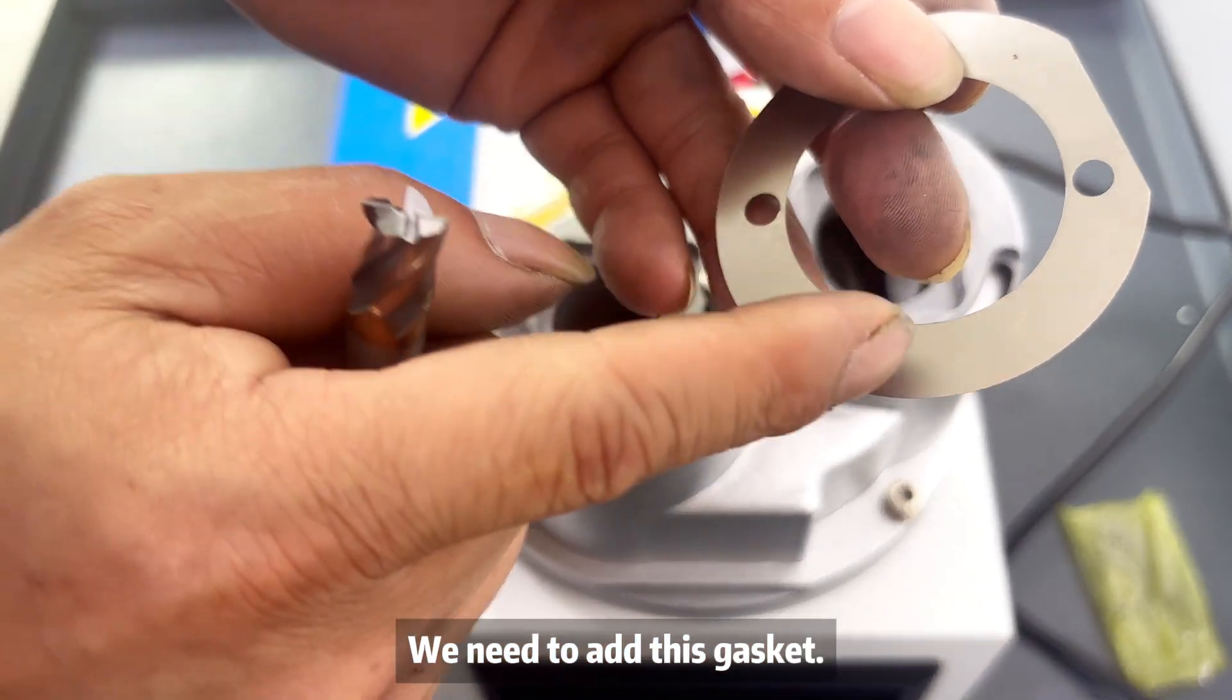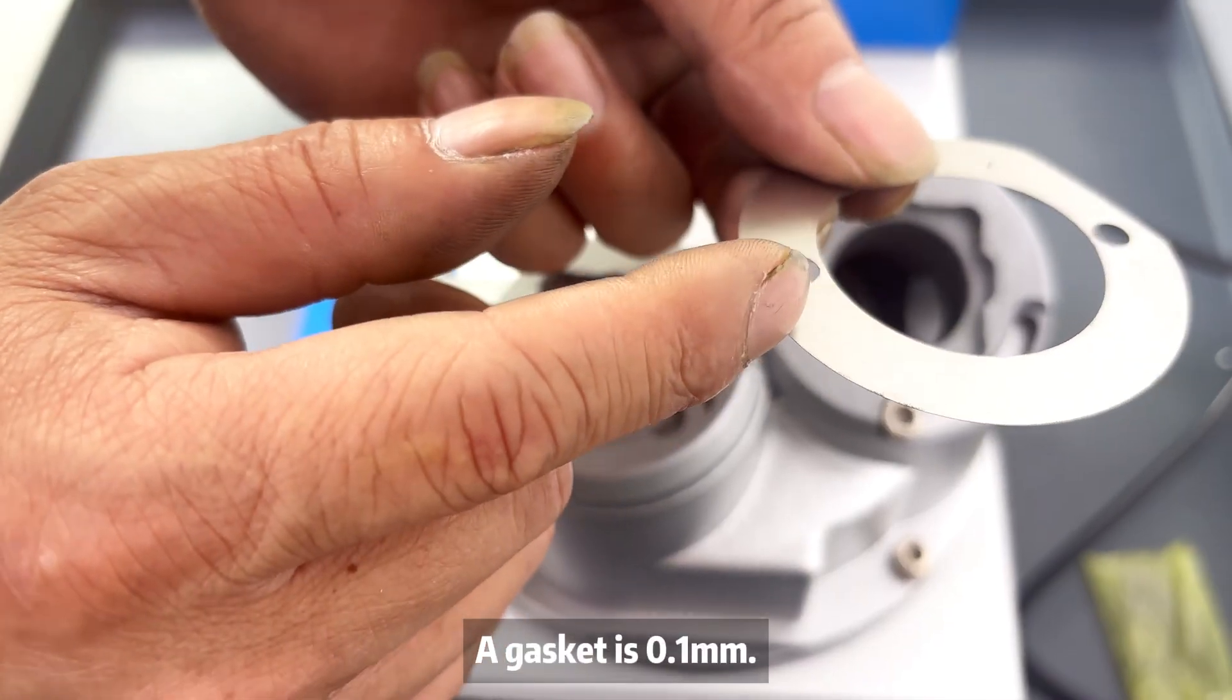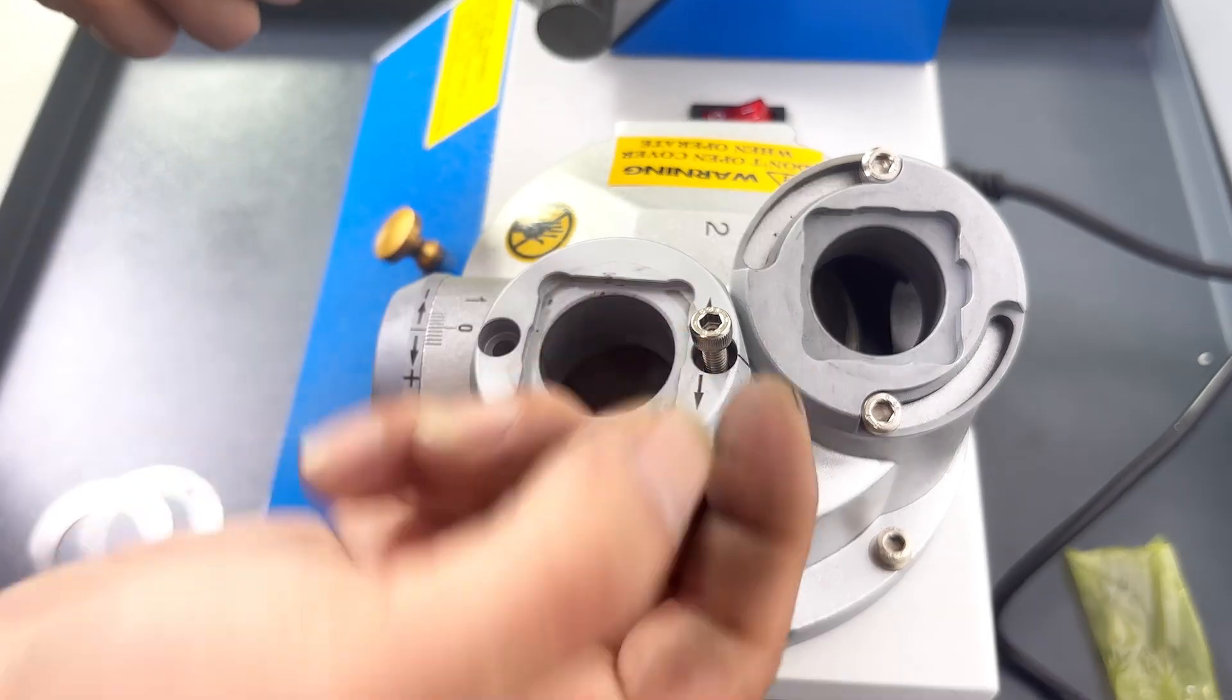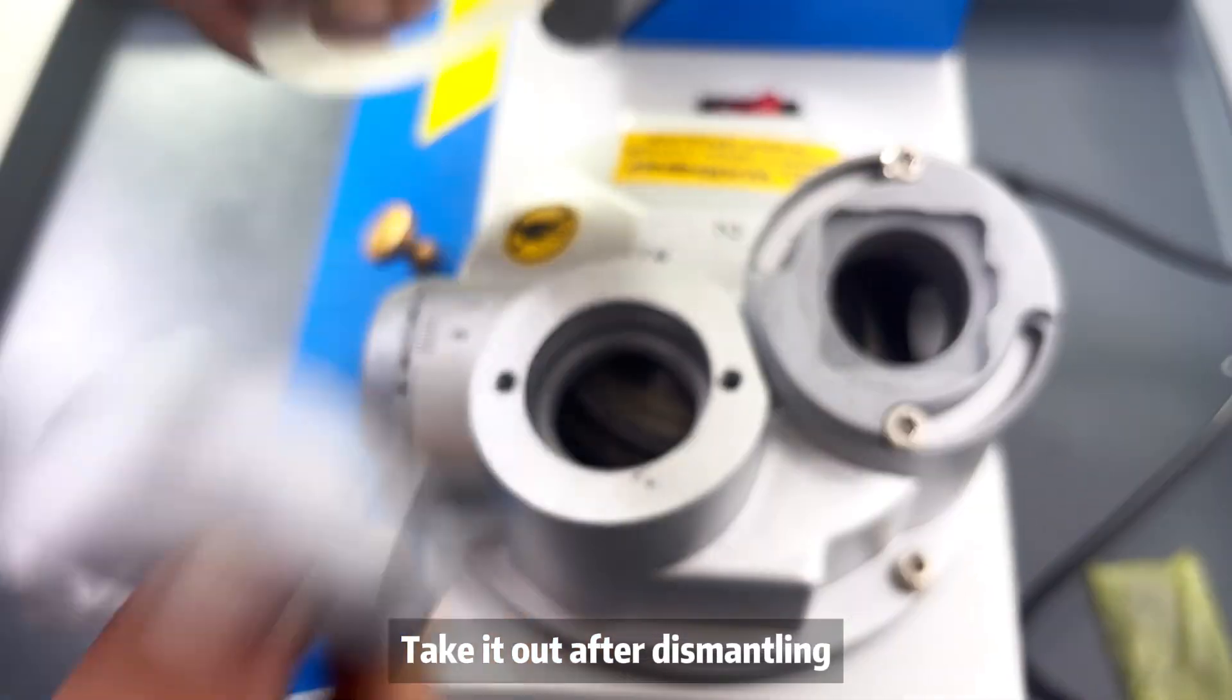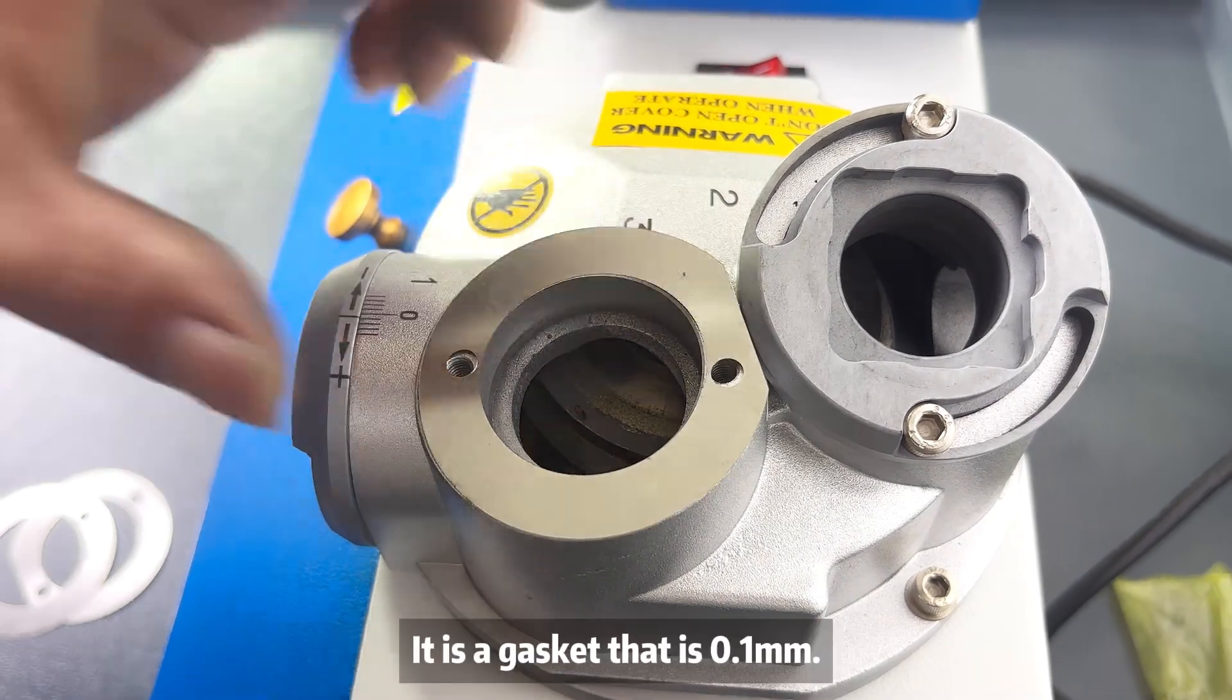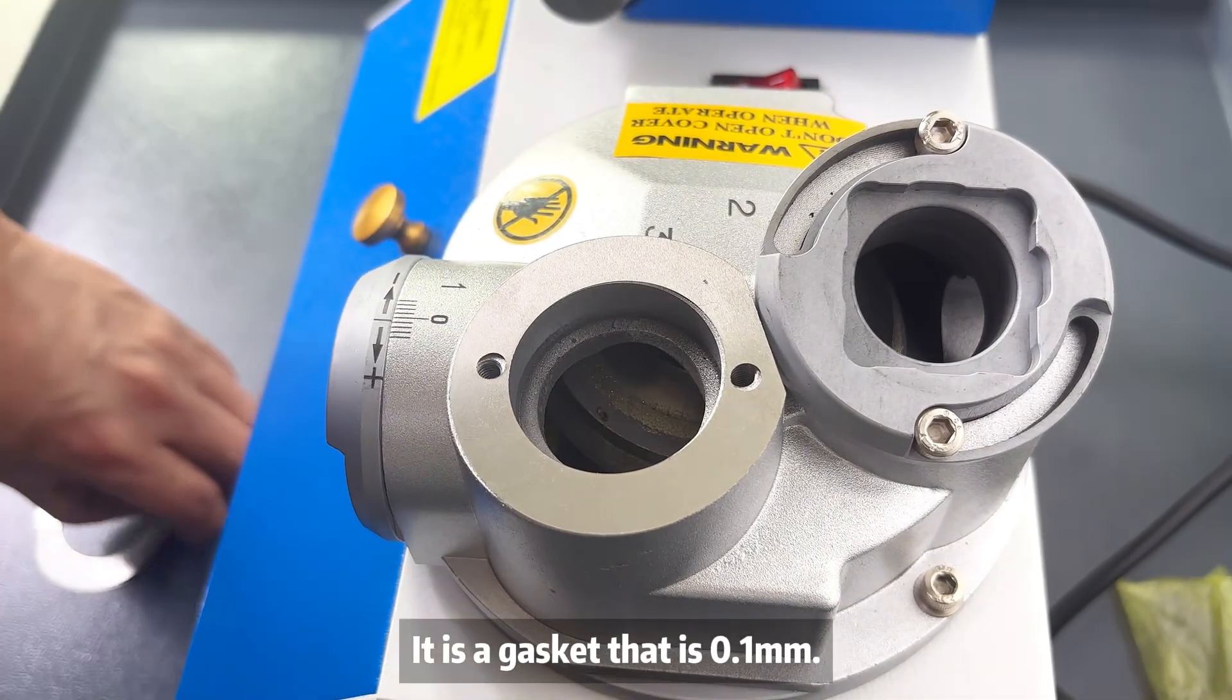We need to add this gasket. A gasket is 0.1mm. Take it out after dismantling and put it on. It is a gasket that is 0.1mm.